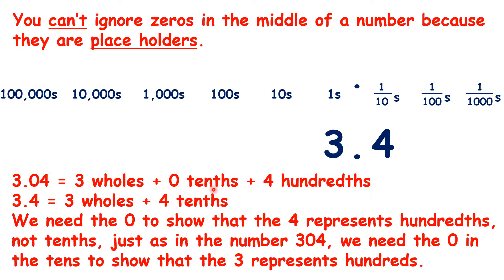We need the zero to show that the 4 represents hundredths, not tenths. Just as in the number 304, we need the zero in the tens to show that the 3 represents hundreds. We couldn't write the number 304 as 34, or as 3, 4. We need the zero as a placeholder.